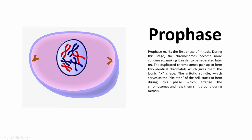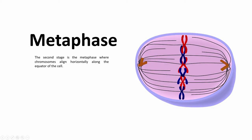Next is metaphase, the second stage of mitosis. This is where the chromosomes align horizontally along the equator of the cell. An important thing to note here is that the mitotic spindle arises from the late prophase, also called pro-metaphase, not from the metaphase itself.